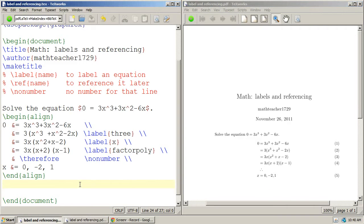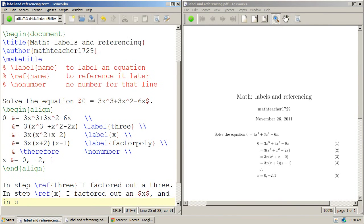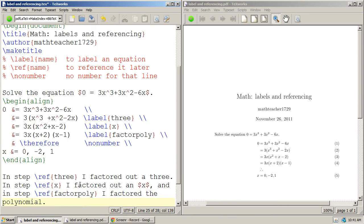Now, we're actually going to reference these guys. So, in step reference 3, I factored out a 3. In step reference x, I factored out an x. And in step factor poly, I factored the polynomial.